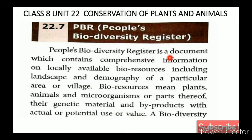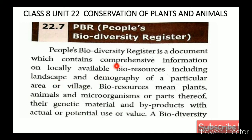People's Biodiversity Register is a document which contains comprehensive information on locally available bio-resources, including landscape and demographic details of a particular area or village.